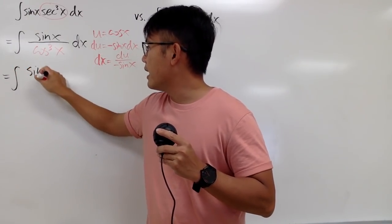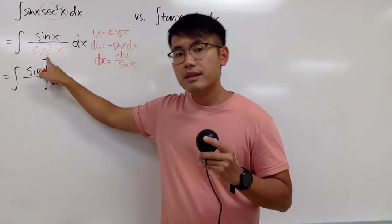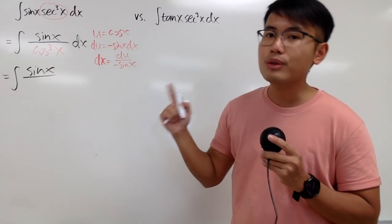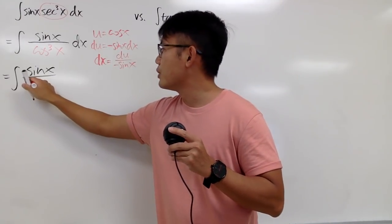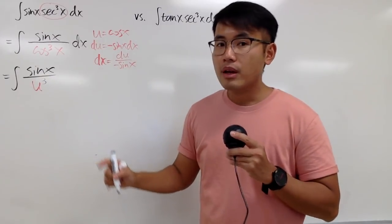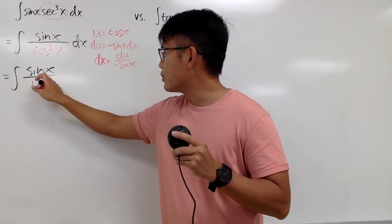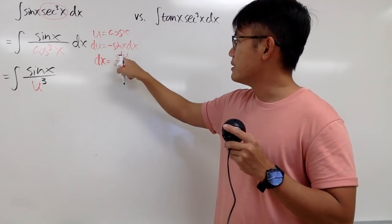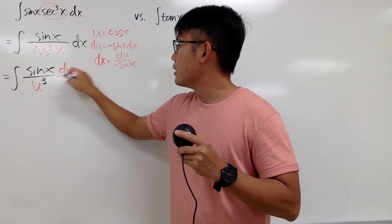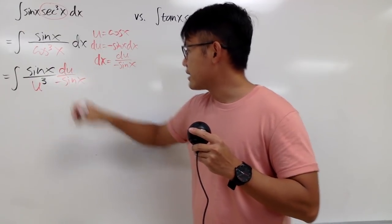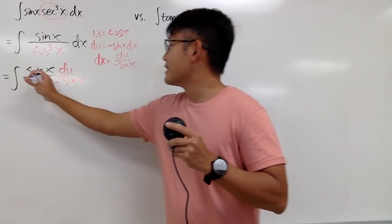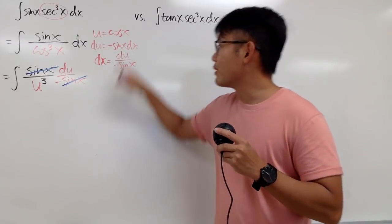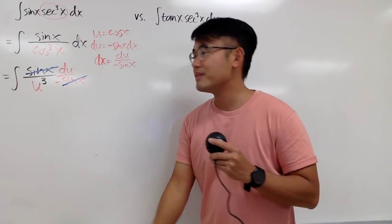Substituting in, the top still has sine x, and the bottom is cosine x to the third power, which becomes u to the third power. Replacing dx with du over negative sine x, we see that the sine x on top and the sine x in the denominator cancel each other out. This is why u equals cosine to the first power x — it's enough, it's perfect.